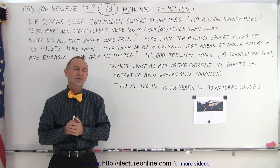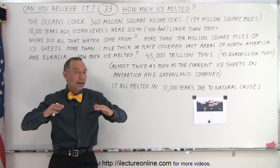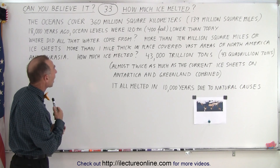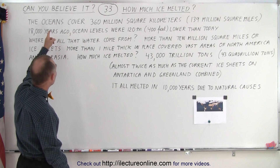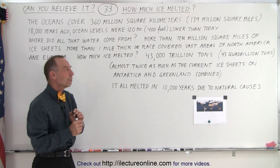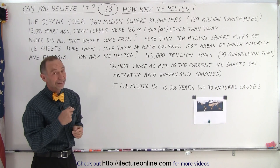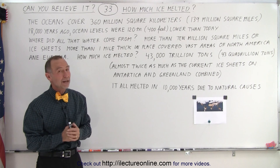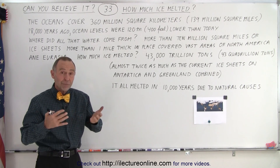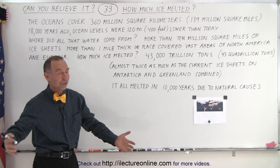But the big question is: how much ice had to melt to cause ocean levels to rise by as much as 400 feet or 120 meters? If we go back and figure out how big the oceans are, we realize that the oceans cover about 360 million square kilometers of the Earth's surface, which equates to about 139 million square miles. Countries such as China or the United States are a little over 3 million square miles in area, so 139 million square miles is a vast surface.